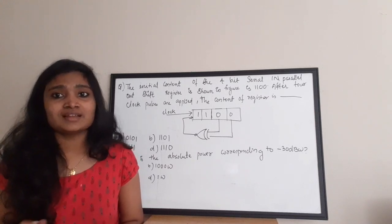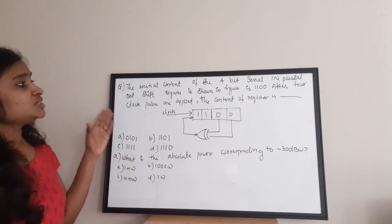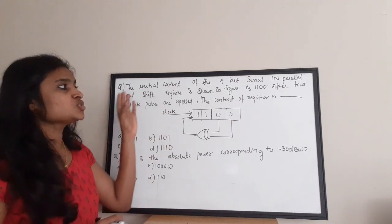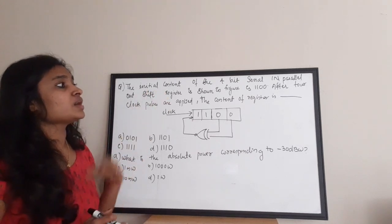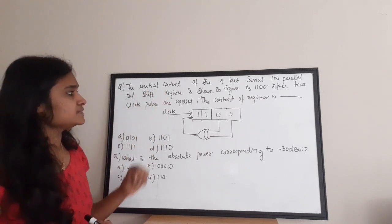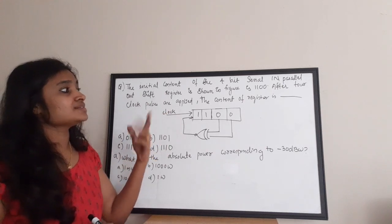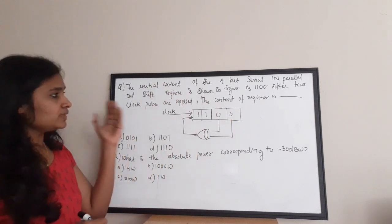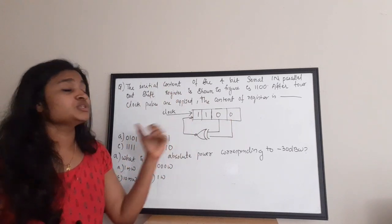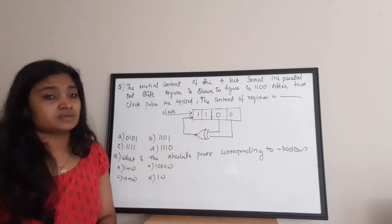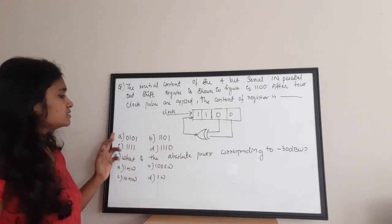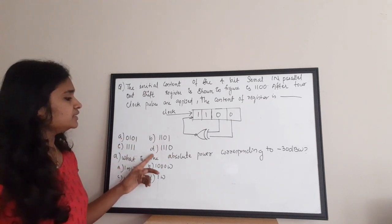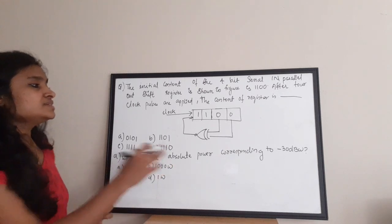The first question: the initial content of a 4-bit serial-in parallel-out shift register is shown in the figure as 1100. After 4 clock pulses are applied, what is the content of the shift register? The options are: A) 0101, B) 1101, C) 1111, D) 1110.